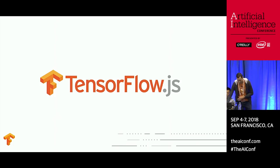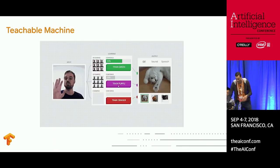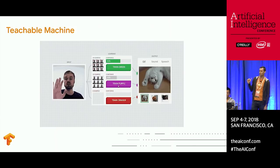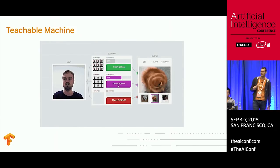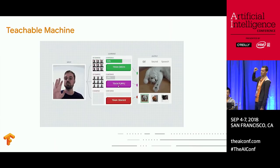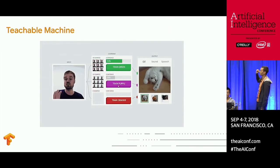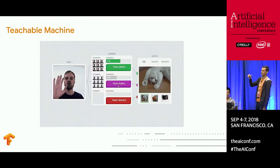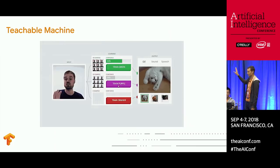Once we launched, we had a lot of great community and Google-built products. One that we built at Google is called the Teachable Machine. This is all done in the browser — there are three labels you can give to what you're training in the webcam, like green, purple, and red. It highlights how a basic image recognition model can run directly in the browser. This stuff is all available online.